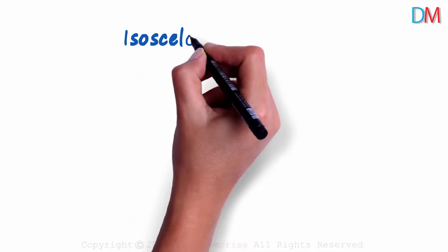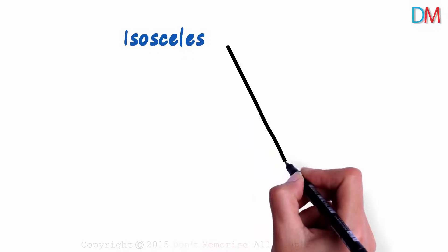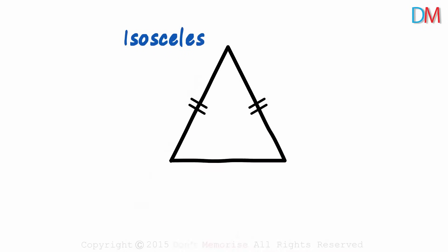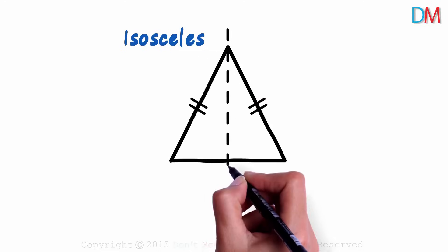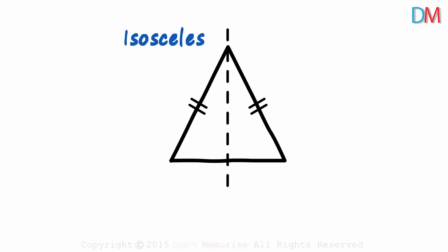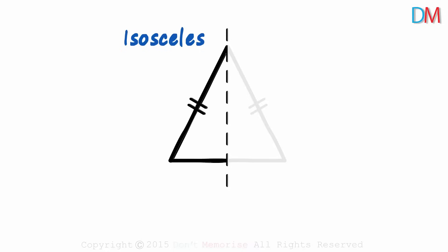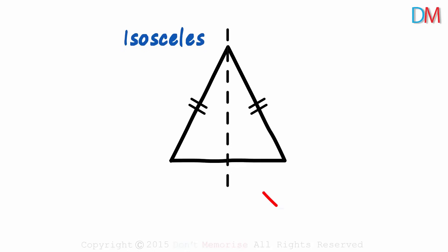Let's draw an isosceles triangle. It's a triangle in which two of the sides are equal to each other. We had seen in the previous video that it has a vertical axis of symmetry. If this part is flipped to the other side, we see that the two parts match exactly, and that's why we say that this shape is symmetrical.